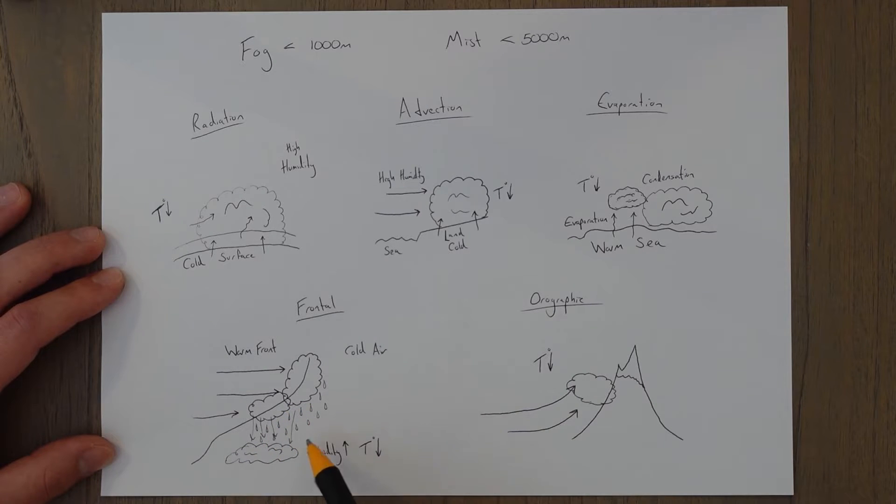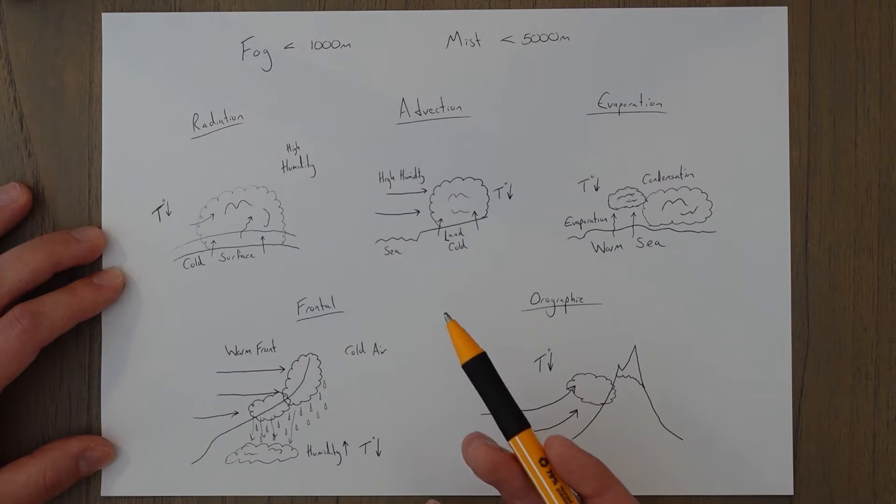The precipitation that falls also increases the levels of humidity at the surface and will lead to a higher relative humidity, which has the effect of increasing the dew point temperature, which means that they don't need to cool down as much for the air to condense out.